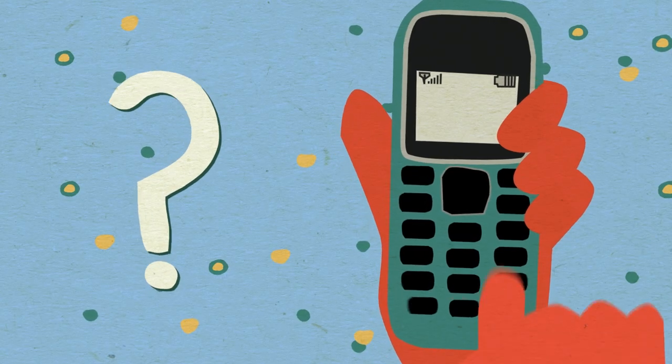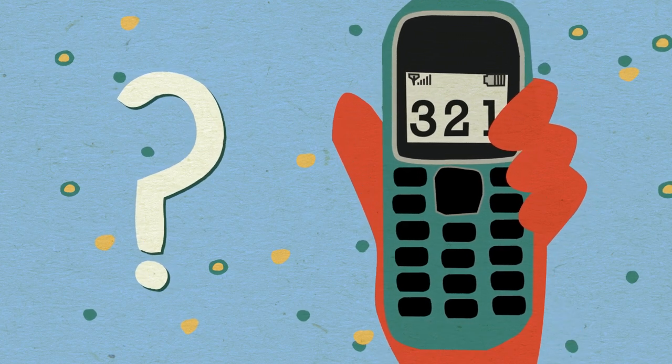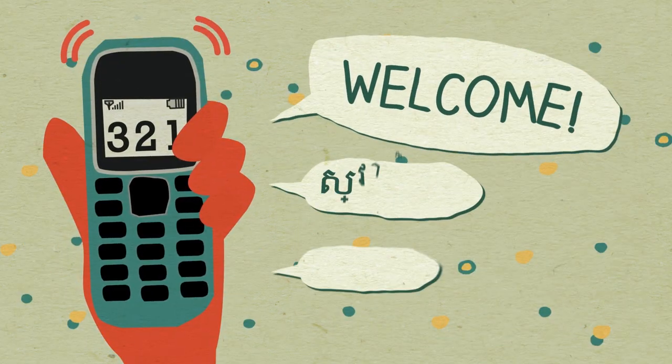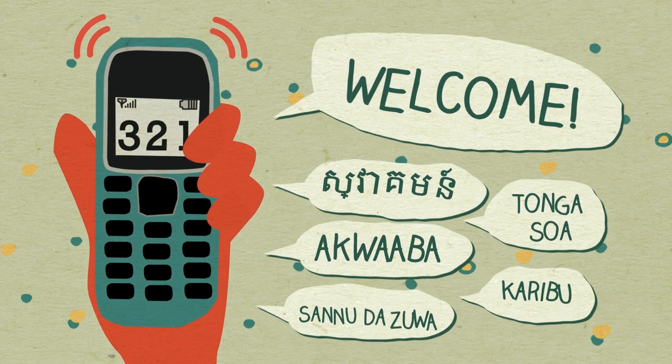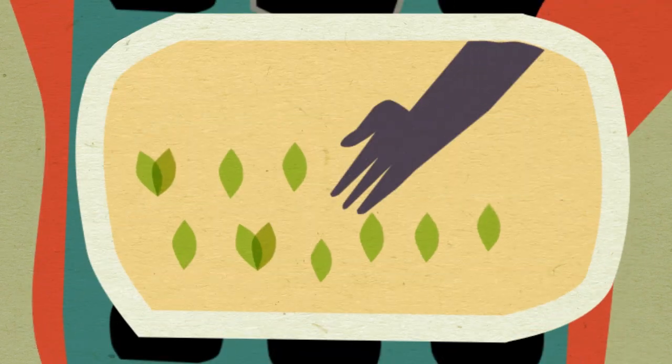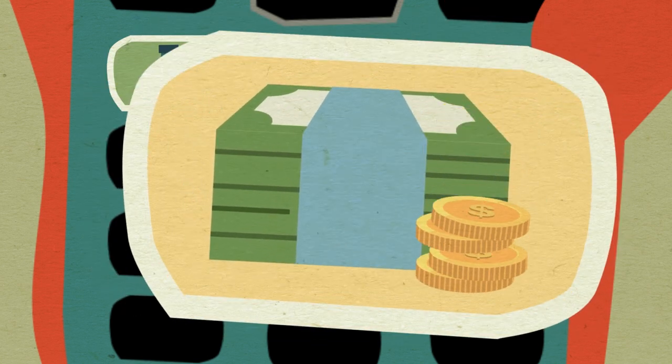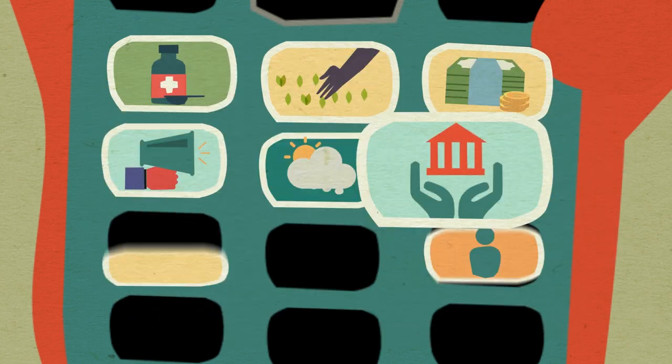How does it work? People call a short, toll-free number, such as 321. They hear spoken prompts in a voice and language they can understand. The menu is organised by topic: health, agriculture, financial inclusion, news, weather, governance and more.